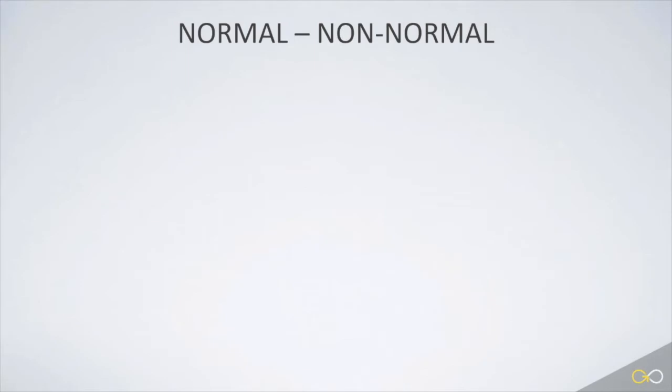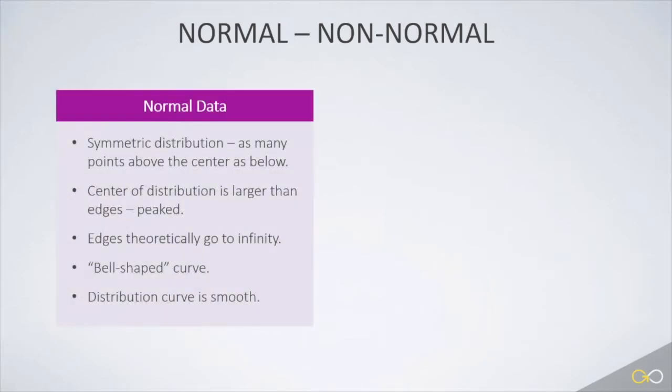Finally, let's review normal and non-normal. Normal data has some very specific characteristics. First, it's symmetric. There are as many data points above the mean as below the mean. Second, it is peaked in the center. There is a central tendency that has many more data points at the center of the distribution than at the edges.